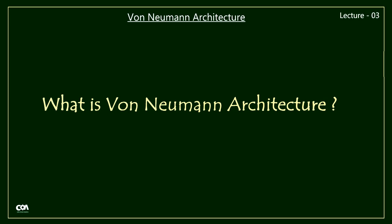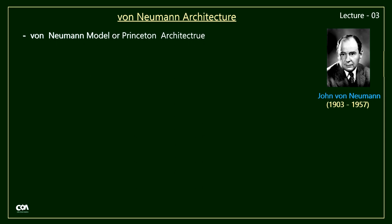Welcome to the course of computer organization and architecture. This is lecture number three and today you will learn about Von Neumann architecture in detail. Von Neumann architecture is also known as the Von Neumann model or Princeton architecture. It was first published by John Von Neumann in 1945, which is based on a stored program concept.